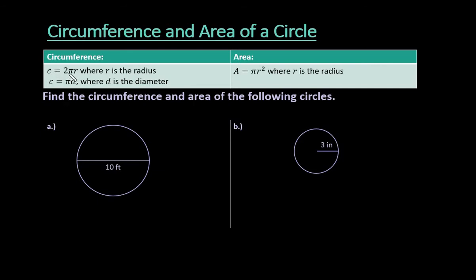For circumference, there are two formulas. You can either use circumference equals 2 times pi times the radius, or you can use the formula circumference equals pi times the diameter. And the reason there are two of them is just remember that the diameter is equal to twice the radius, or the radius is half of the diameter.